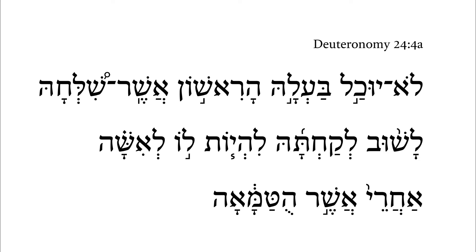Deuteronomy 24:4a. Verse 4 begins to round out this section in Deuteronomy on this divorce law, and it does not let up on complications. So let's look at a couple of these things. I want to pay particular attention to this word here, so let's get there quickly.